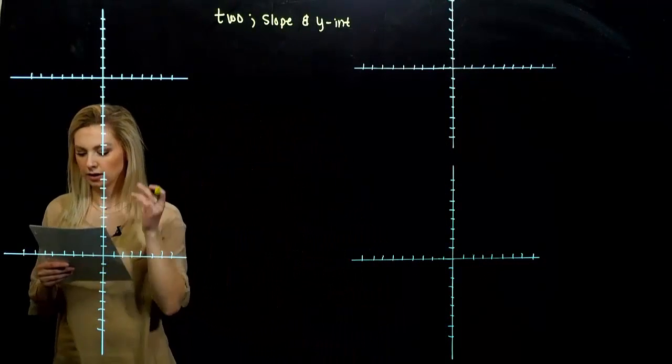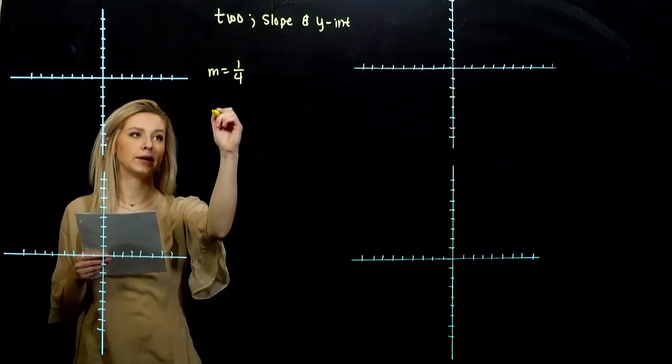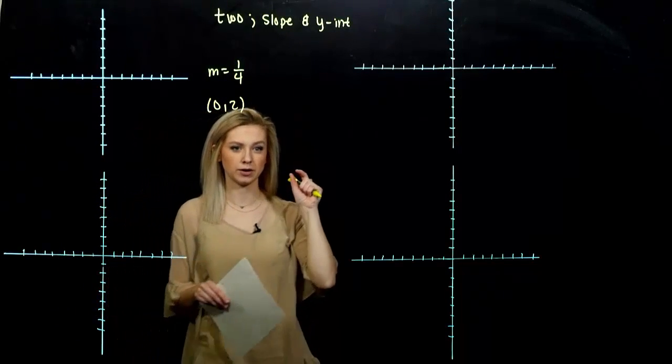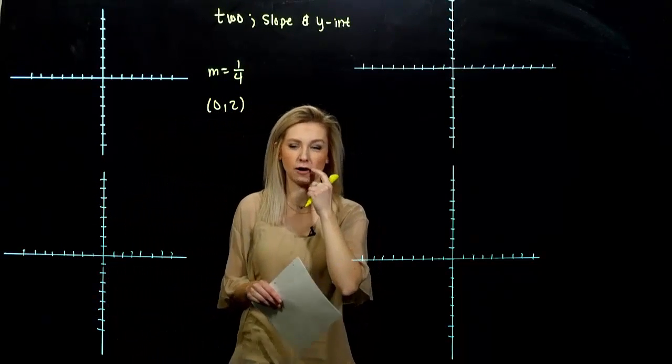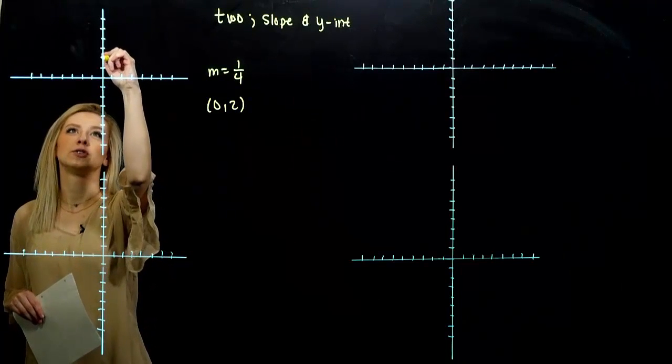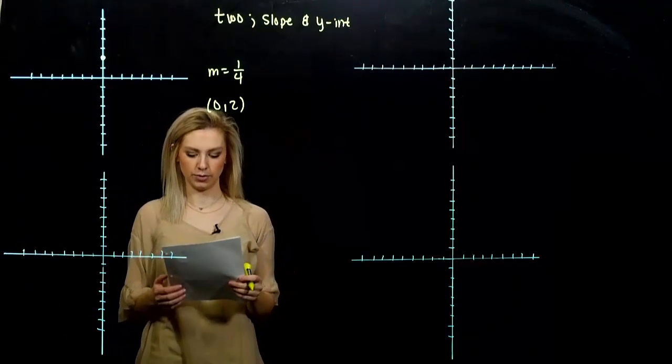The first example: we want to draw a line that has slope one-fourth and y-intercept zero-two. The point tells us where to start. That is going to fall on my line. So we first want to plot the y-intercept zero-two. I know my line is going to cross the axis there. Line has to go through it.